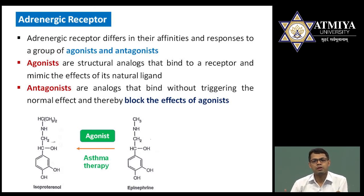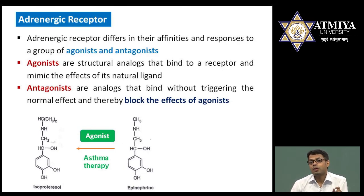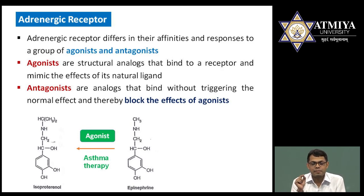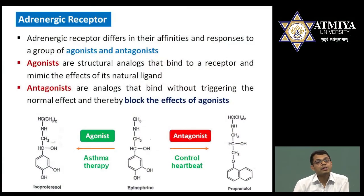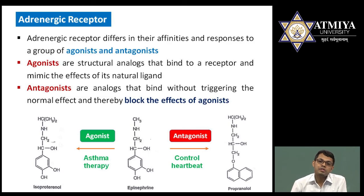Antagonists are not necessarily bad — they are useful when a signal transduction pathway is occurring but is not required. Structurally similar molecules are designed that can bind to the receptor but do not activate it. Agonists bind and activate the receptor causing transduction; antagonists bind but do not activate, blocking the effect of agonists. A best example is propranolol, which is used for controlling heartbeat. Both agonists and antagonists are important but at different times.